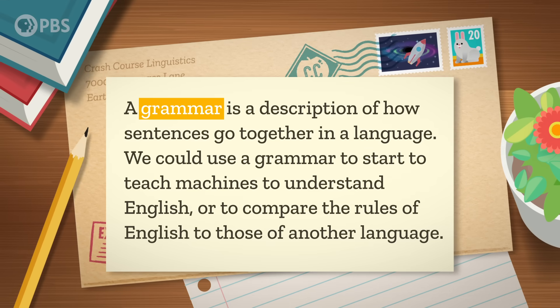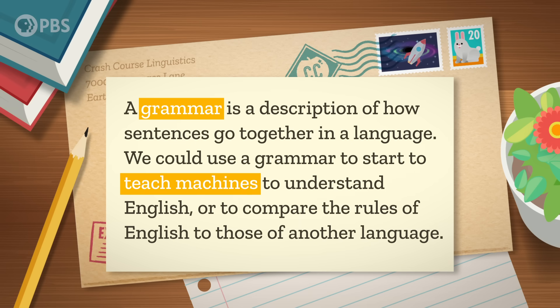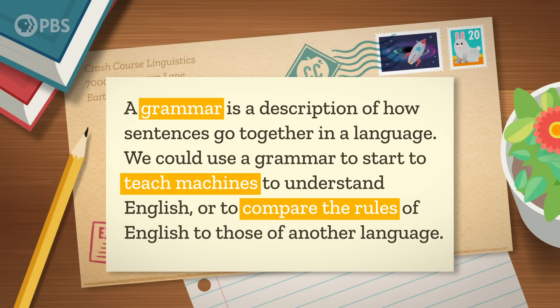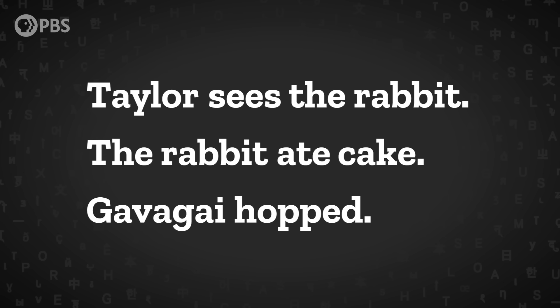We can make a lot of sentences from just a few basic bits of structure. This leads us to an interesting puzzle: let's try to figure out all of the possible structures for sentences in English — in other words, let's try to make a grammar of English. A grammar is a description of how sentences go together in a language. We could use a grammar to start to teach machines to understand English, or to compare the rules of English to those of another language. Let's start out with a few sentences: 'Taylor sees the rabbit,' 'The rabbit ate cake,' and 'Gavagai hopped.'